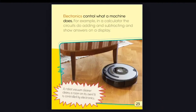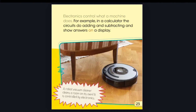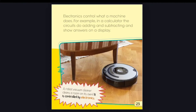Electronics control what a machine does. For example, in a calculator, the circuits do adding and subtracting and show answers on a display. A robot vacuum cleaner cleans a room on its own — it is controlled by electronics.